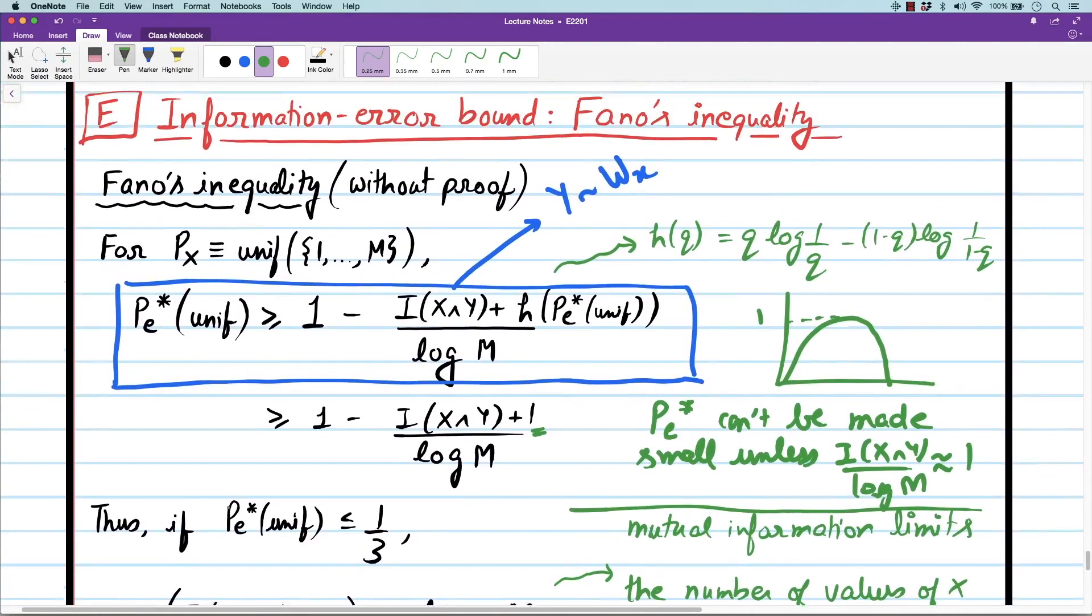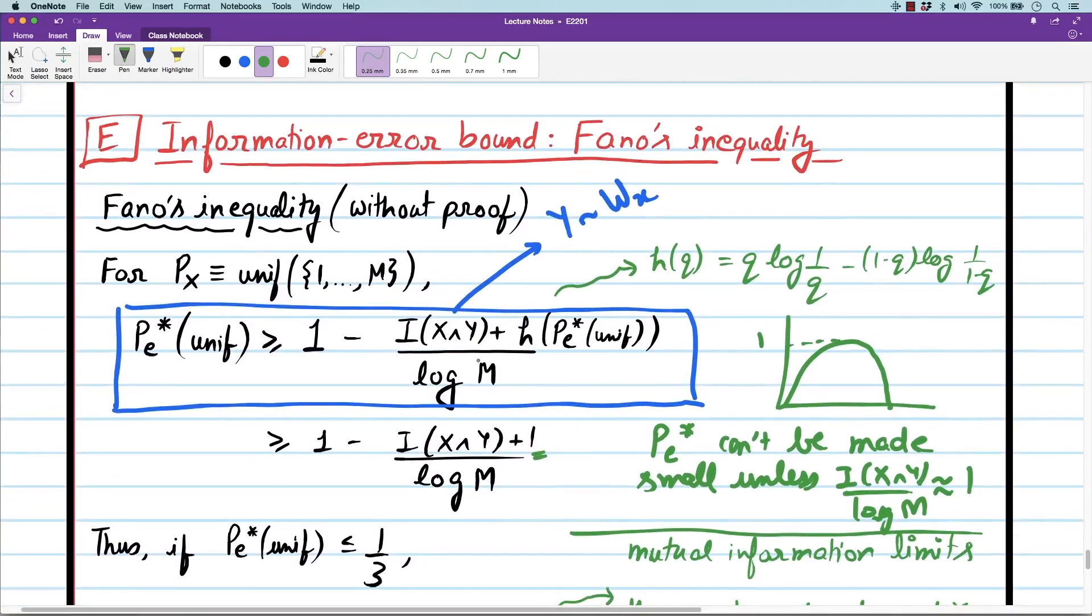Remember we saw last time that this mutual information for uniform prior was the average divergence, average distance. Now we are saying if you want the probability of error to be small, then this average distance must be greater than log of number of hypotheses. Earlier we had made a guess that log of number of hypotheses M that you can resolve is roughly the minimum distance between w_x and w_x prime. But what Fano's inequality is telling us is that heuristic is not very precise. What you can resolve is the average distance to the centroid, that's the log of number of hypotheses you can resolve.